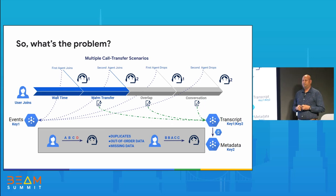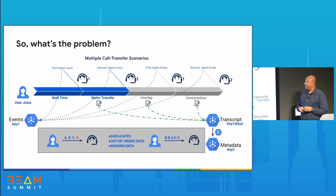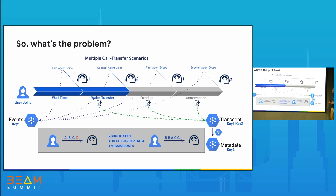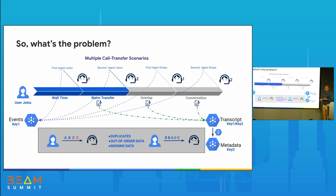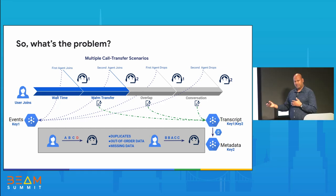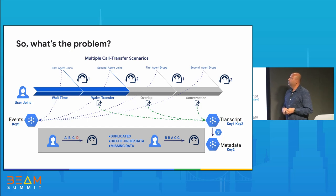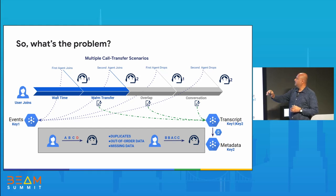So what's the problem? When we say a customer and an agent are talking, it's not as simple as just two people talking. Typically when you call into a call center, you might be on hold for a while, attended by one person who may not be the right person, so you can get a transfer. It could be a warm transfer where another agent comes online while you're still talking to the first agent, or you might go back to a queue and be rerouted to someone else.